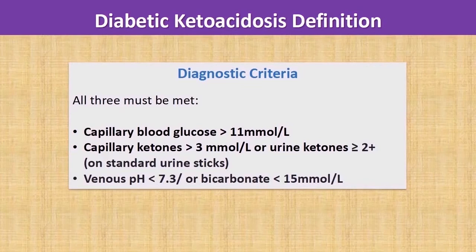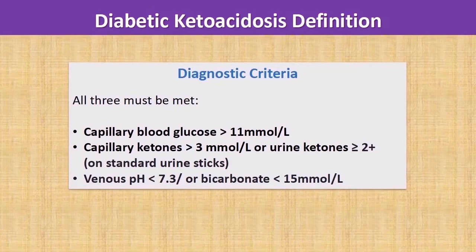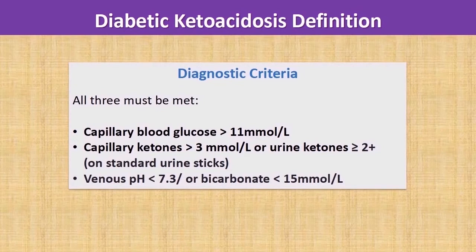Ketosis is defined as capillary ketones of 3 mmol/L or urine ketones of 2+ and above. For metabolic acidosis, the venous pH should be below 7.3. It is important to understand that ketosis and metabolic acidosis are the hallmark features of DKA, and these two features should not be found in patients with pure hyperglycemic hyperosmolar syndrome.